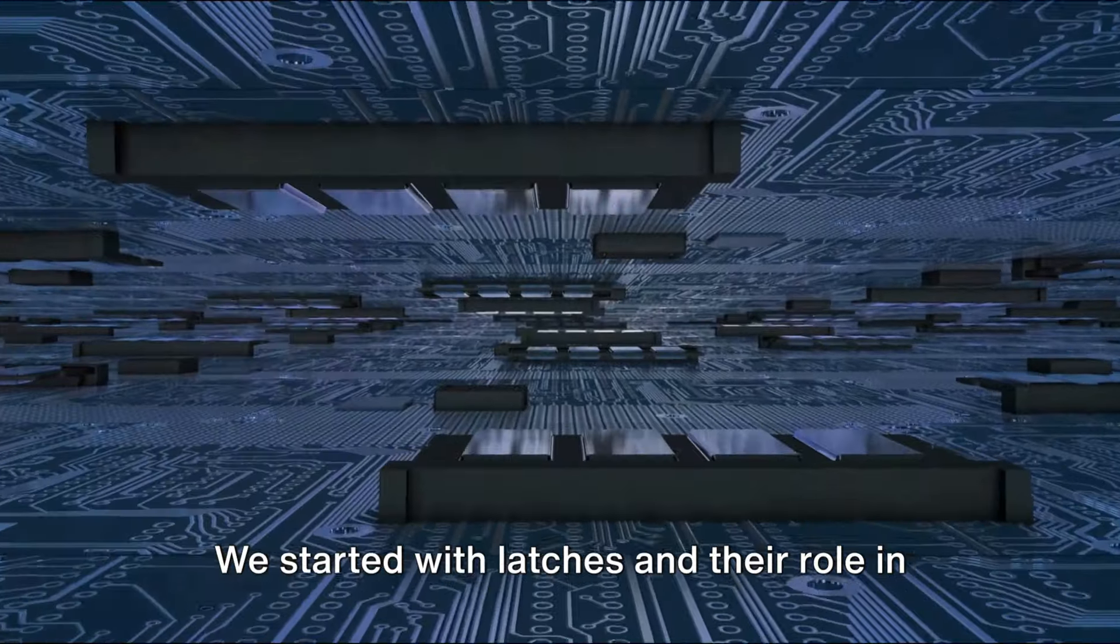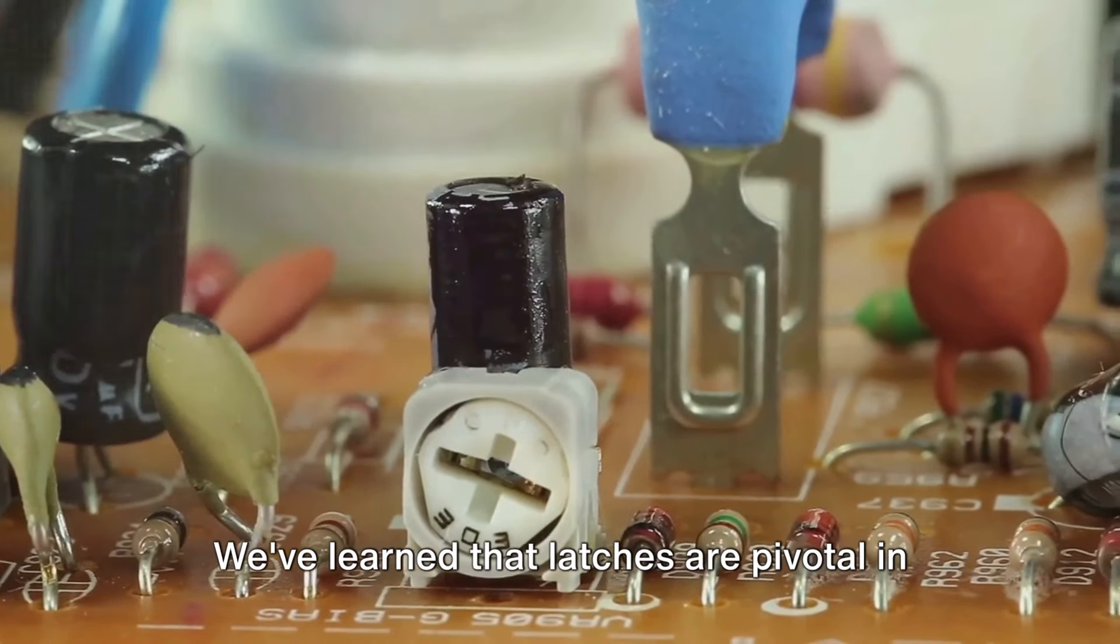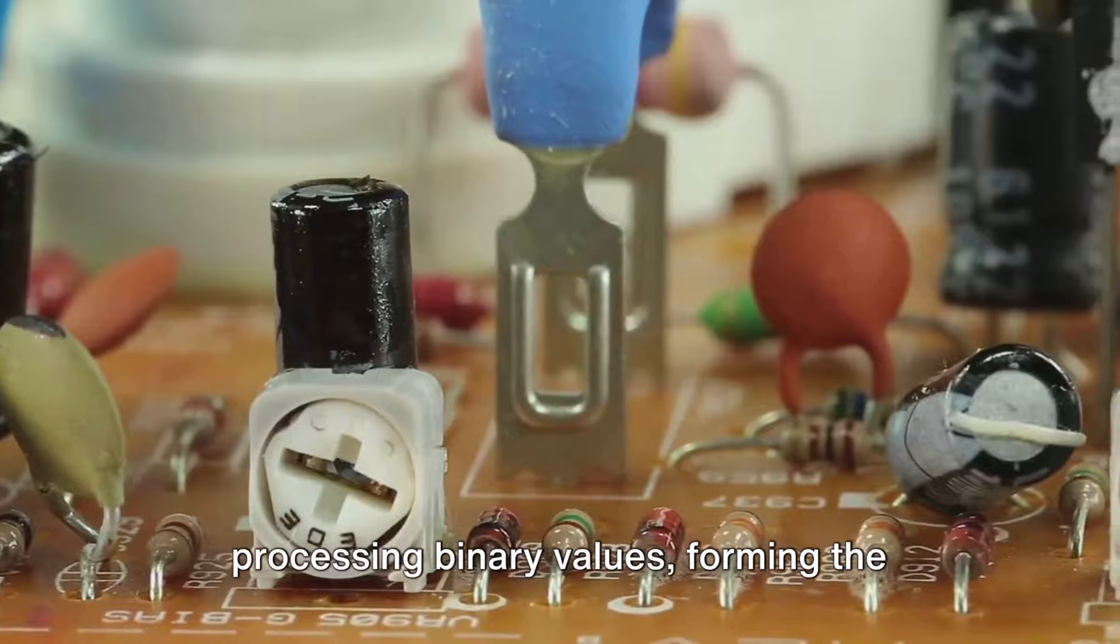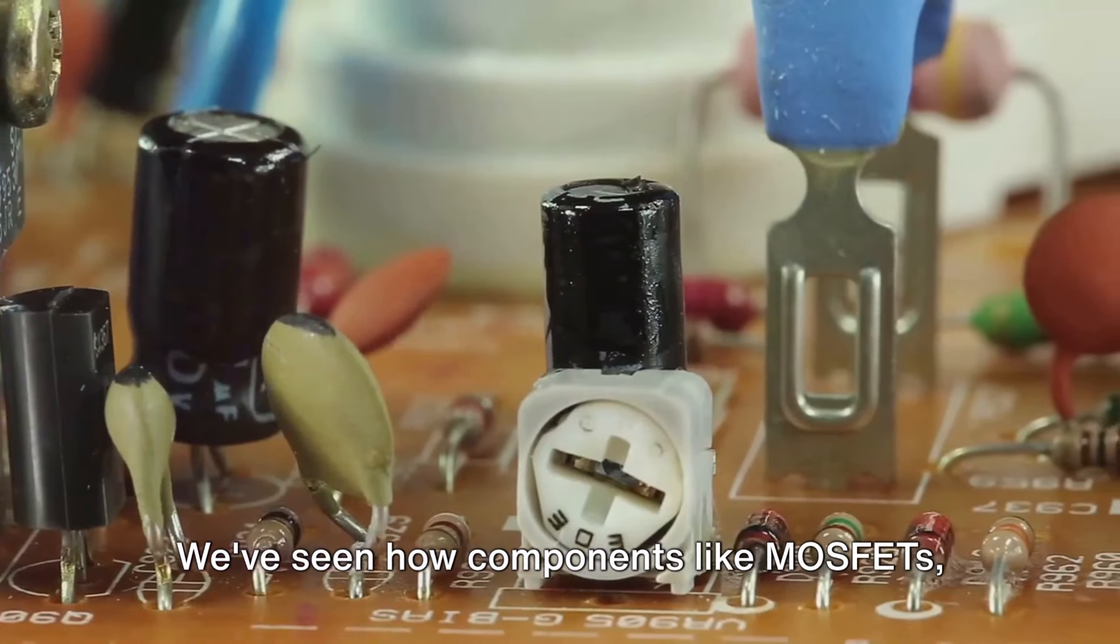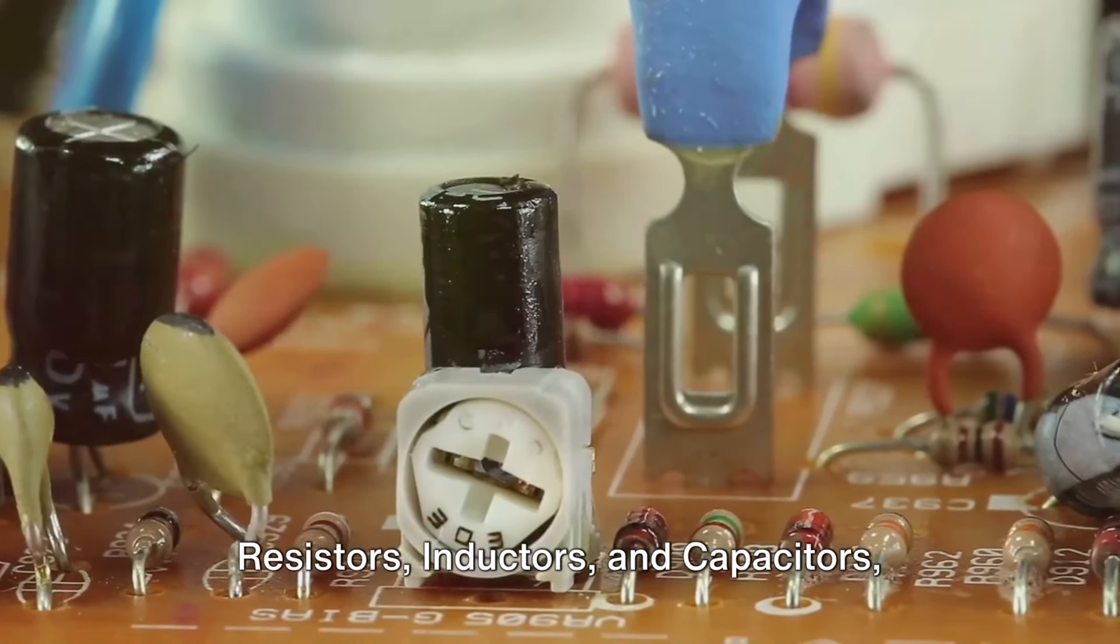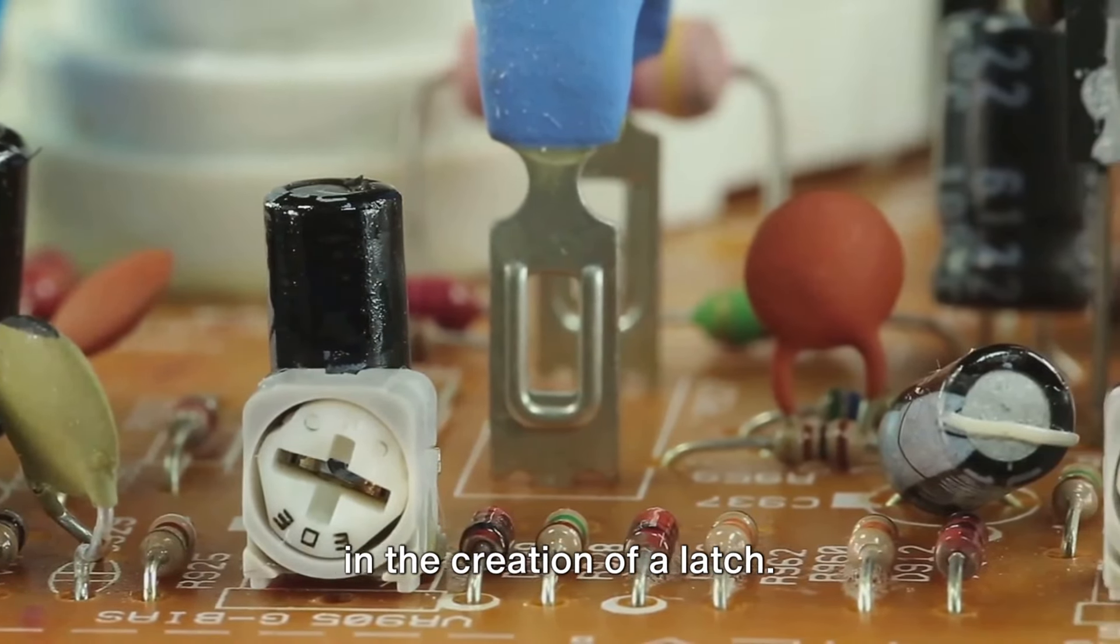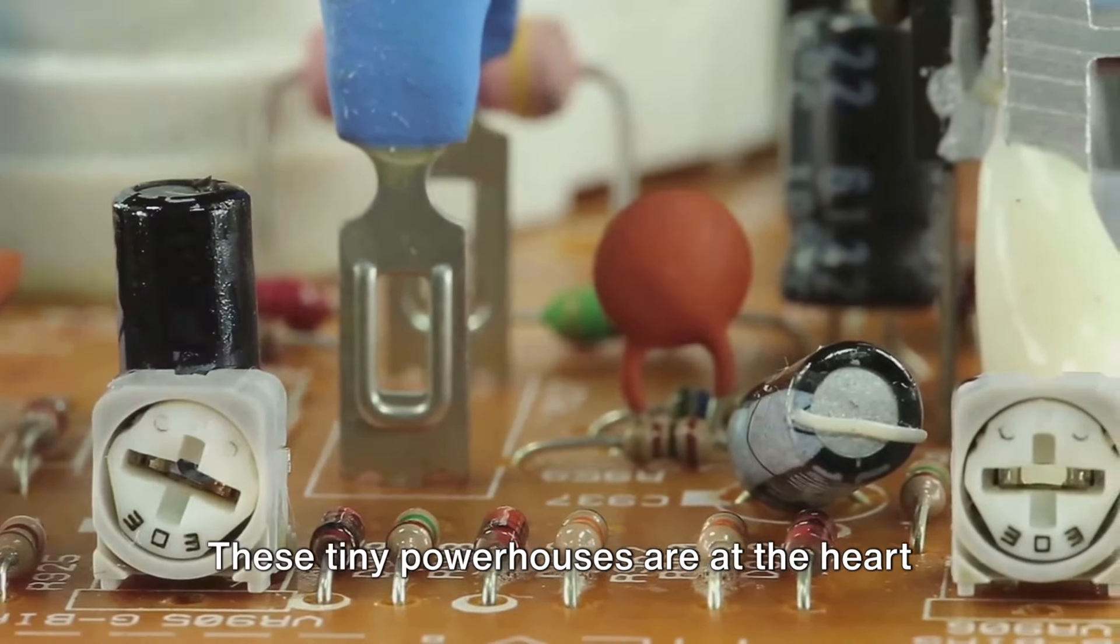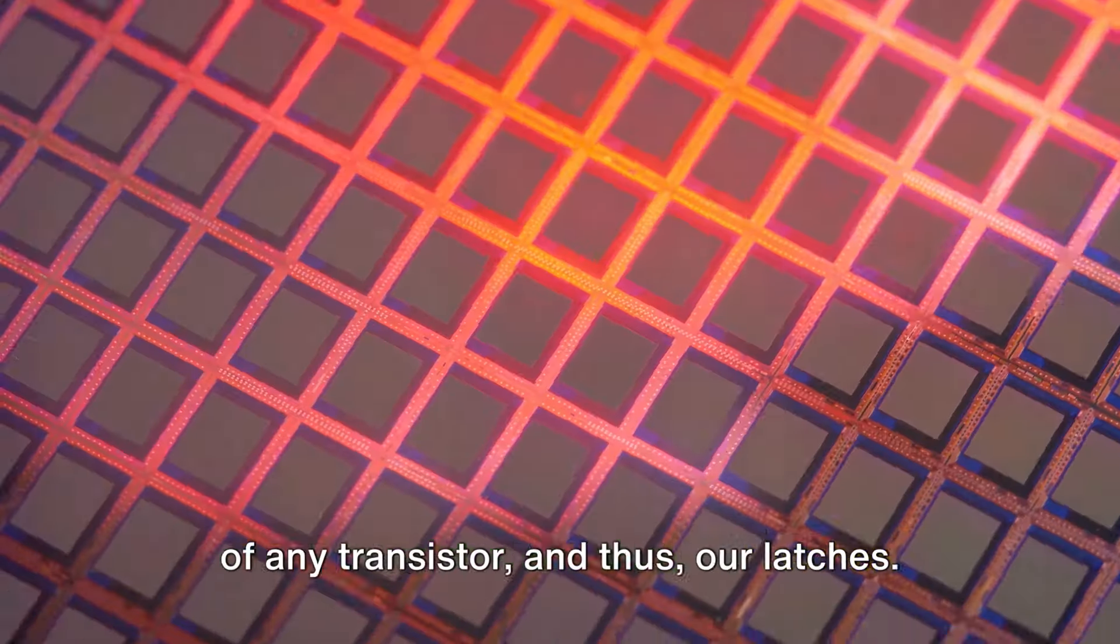All right, let's pause for a moment and look at how far we've come. We started with latches and their role in digital circuits, delved into their creation, and explored the intricate world of transistors. We've learned that latches are pivotal in processing binary values, forming the basis of digital logic. We've seen how components like MOSFETs, resistors, inductors, and capacitors, collectively known as RLC, play their part in the creation of a latch. But the real star of the show? That's right, semiconductors. These tiny powerhouses are at the heart of any transistor, and thus are latches.